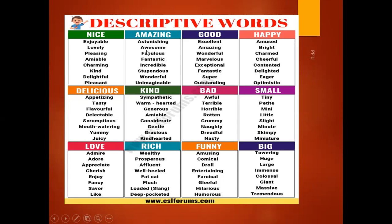For 'light,' we have awesome and fabulous. For 'good,' we have excellent, amazing, wonderful, and marvelous. For 'happy,' we can use cheerful, bright, or charming. For 'delicious,' we have appetizing, tasty, flavorful, scrumptious, mouth-watering, or yummy. For 'kind,' we have warm-hearted, generous, amiable, considerate, and gentle. For 'bad,' we have awful, terrible, horrible, rotten, grumpy, naughty, and nasty.